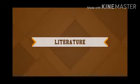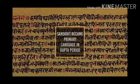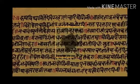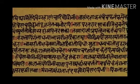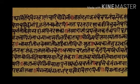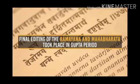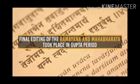Literature was also very prominent during the Gupta period. Sanskrit became the primary language and was the foremost language of the time. The editing of the Ramayana and the Mahabharata also took place during the Gupta period.